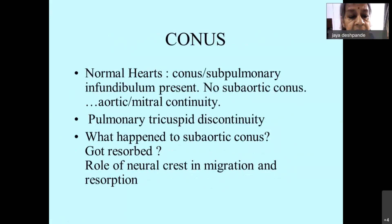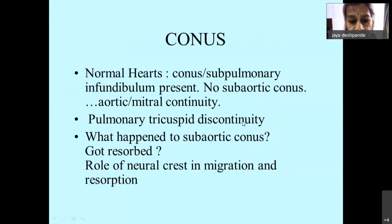In a normal heart there is a sub-pulmonic infundibulum but no sub-aortic infundibulum, and therefore we have aortic-mitral fibrous continuity. This also causes pulmonary-tricuspid discontinuity. During the course of development, the sub-aortic conus probably got reabsorbed, and there is a role of the neural crest in the resorption of the sub-aortic conus.